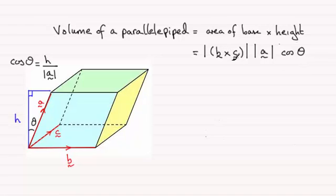Now B crossed with C is a vector. It's a vector which is normal, remember, to the two vectors B and C, so in other words it will be in the direction of H.